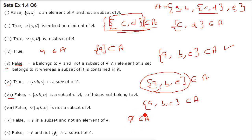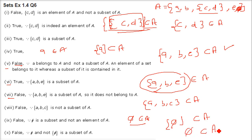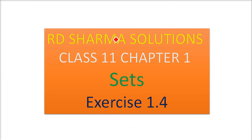Ninth: φ ∈ A — false. φ is not written as an element inside A, so it does not belong. Tenth: {φ} ⊆ A — also false. For this to be a subset, φ would need to be an element inside A, but it is not listed there.